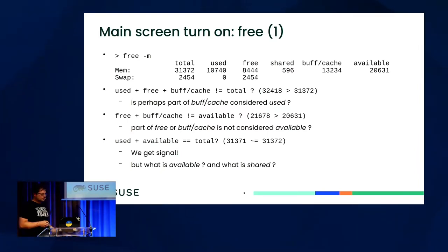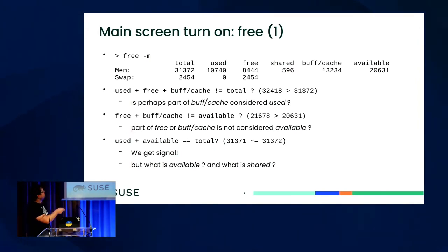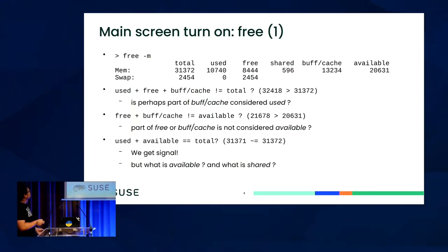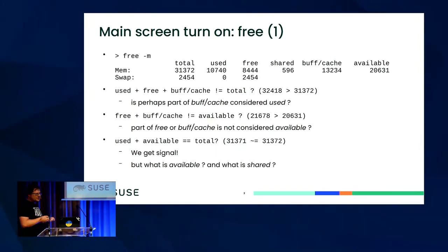Without digging into the source code of the free command, we can try to figure out how it works. Maybe the memory is either used, free, or in the page cache, and those add up to total — but no, it's closer but still not a perfect match. Maybe available is free plus the cache — again close but not exactly. It turns out that used plus available equals total, modulo some rounding error due to the conversion to megabytes. But we still don't know exactly what 'available' and 'shared' mean.